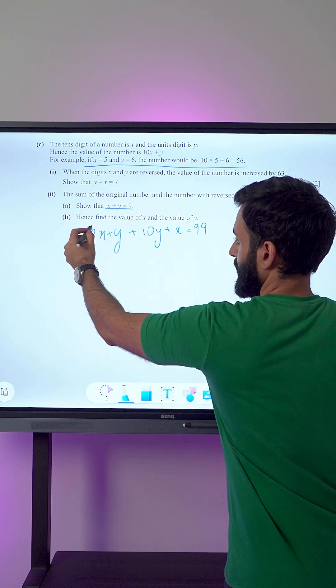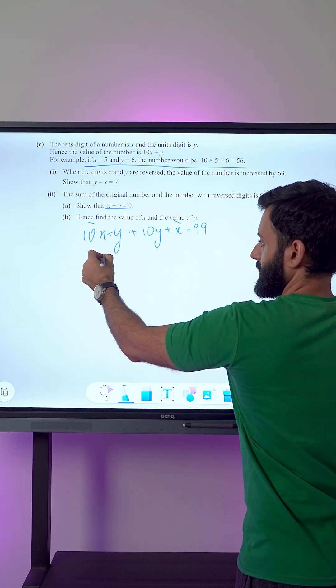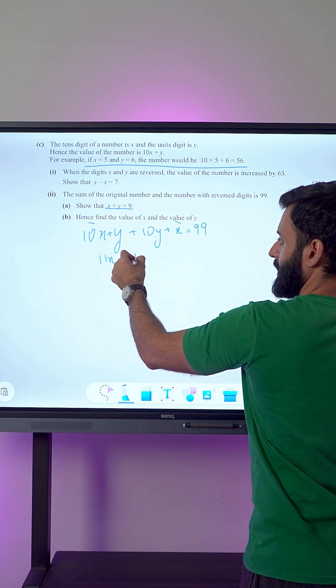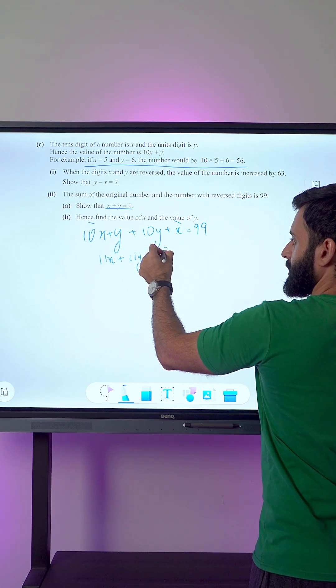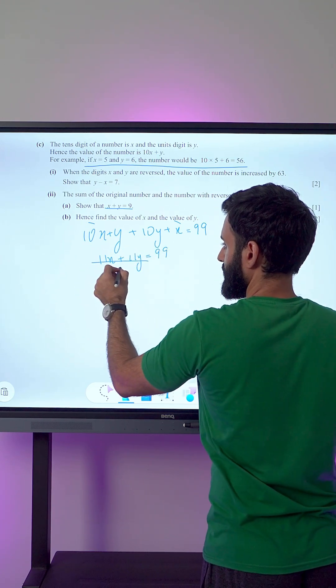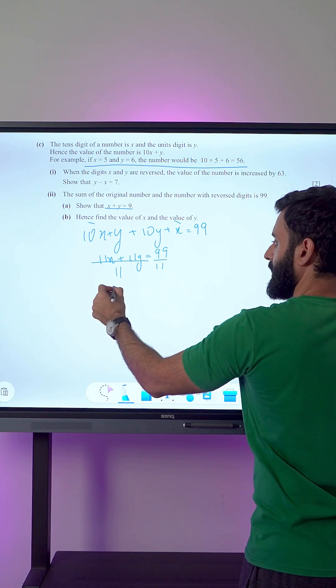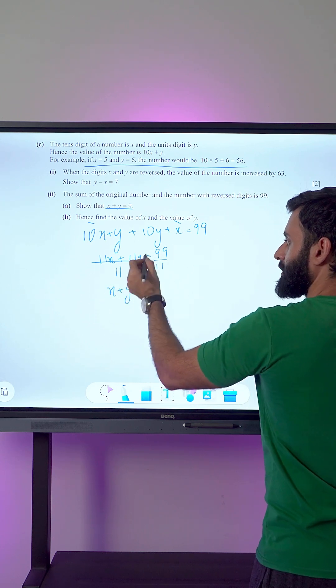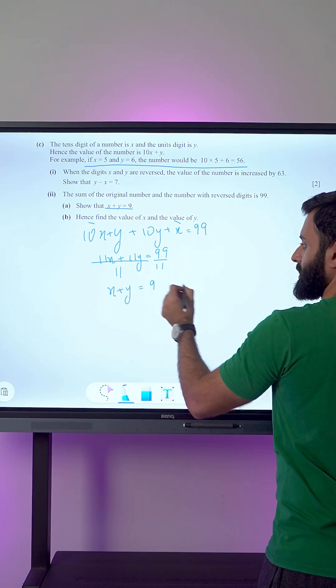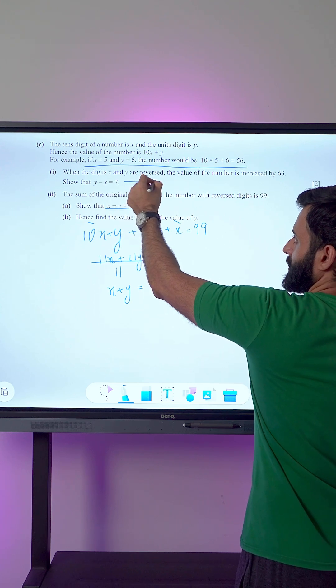10x plus x is 11x, y plus 10y is 11y, which equals 99. We can divide both sides by 11, and we have x plus y equals 99 upon 11, which is 9.